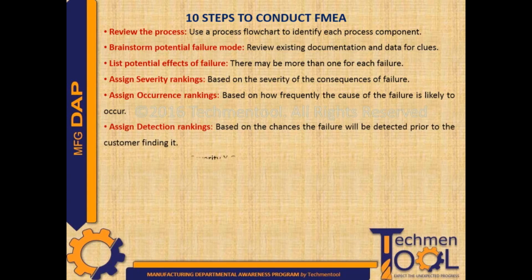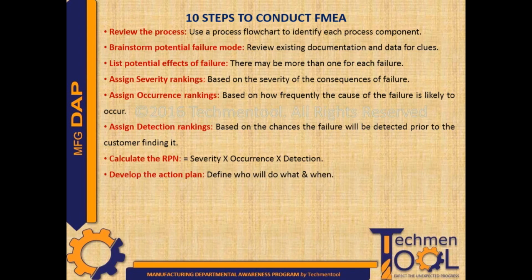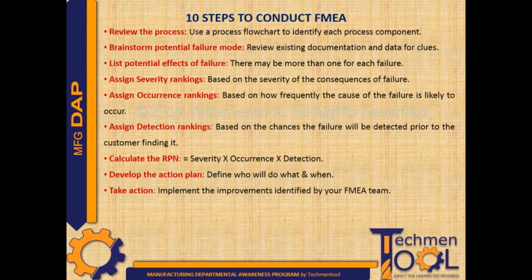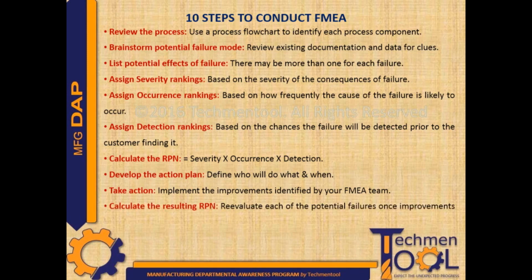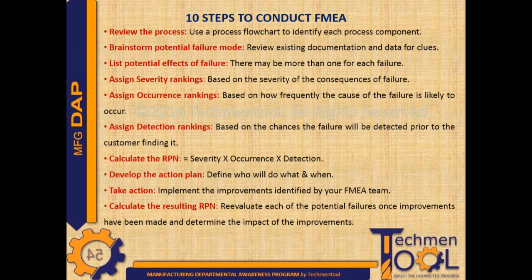Step 6: Assign detection rankings based on the chances the failure will be detected prior to the customer finding it. Step 7: Calculate the Risk Priority Number. Step 8: Develop the action plan — define who will do what and when. Step 9: Take action — implement the improvements identified by your FMEA team. Step 10: Calculate the resulting Risk Priority Number, re-evaluating each potential failure once improvements have been made and determining the impact of those improvements.